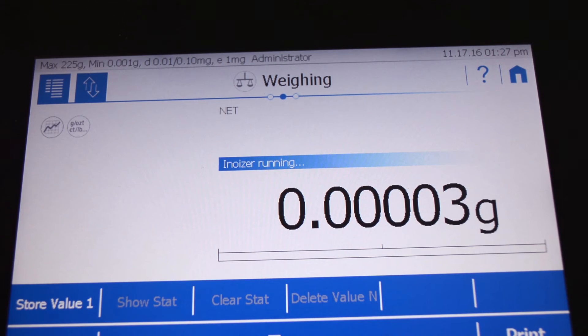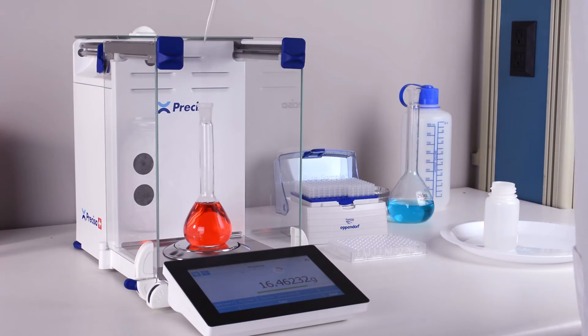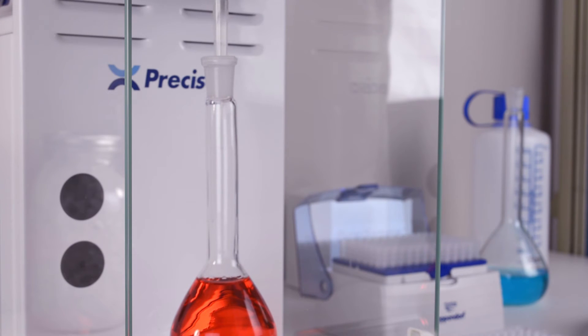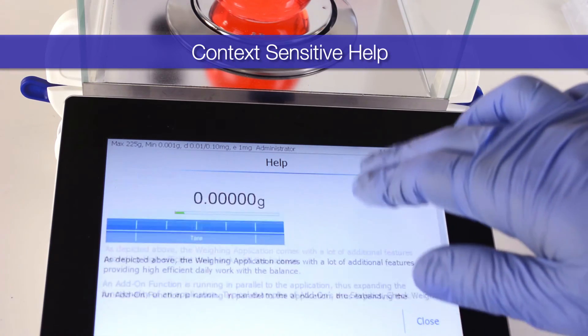If you ever feel you need extra help with understanding the balance's advanced features, you can refer to the context-sensitive help box. It will give you only the instructions you need based on what application or menu you have open.